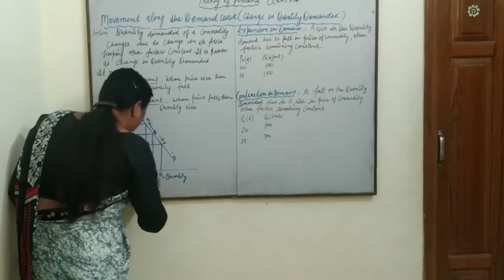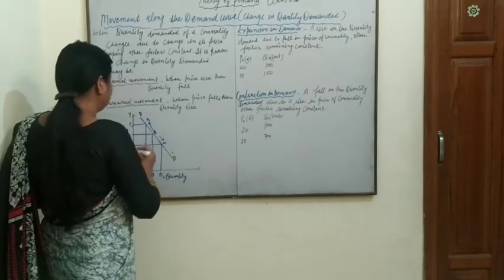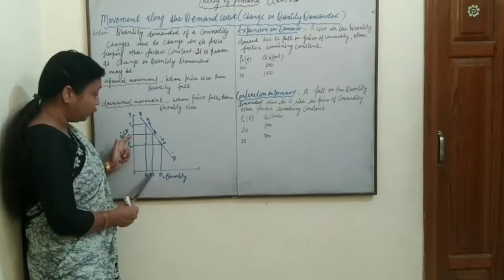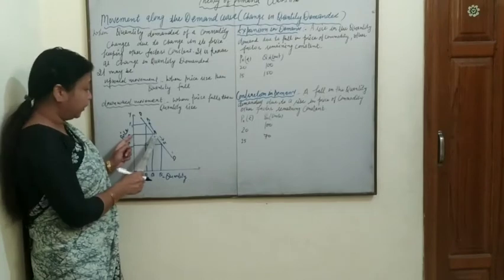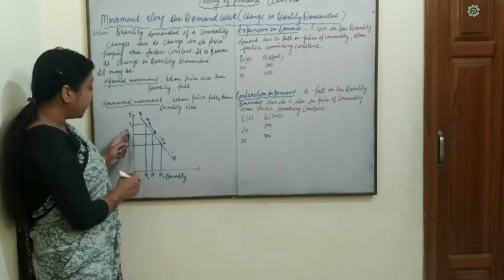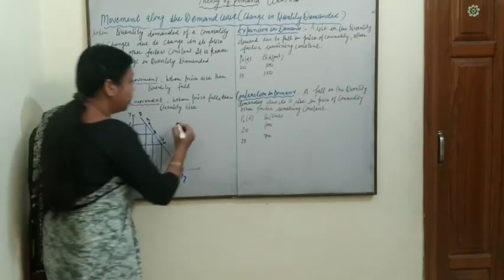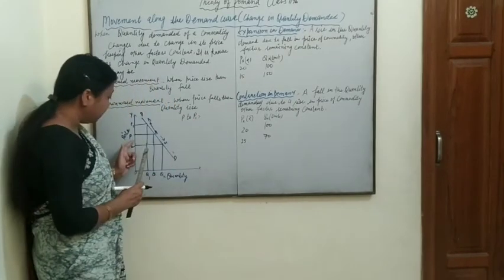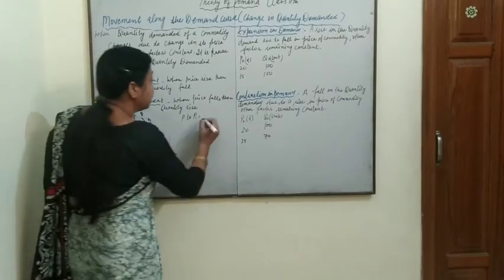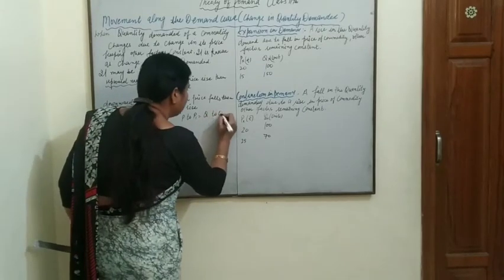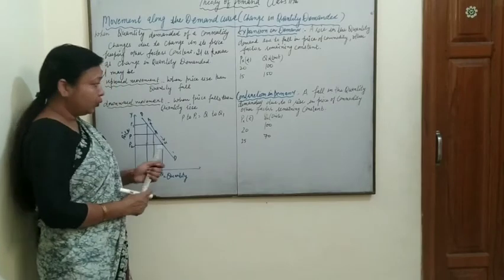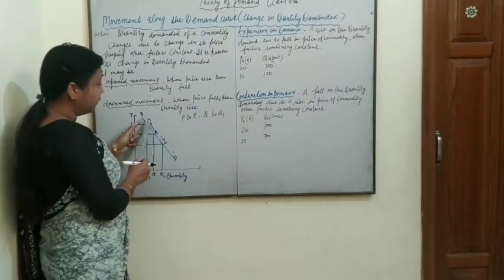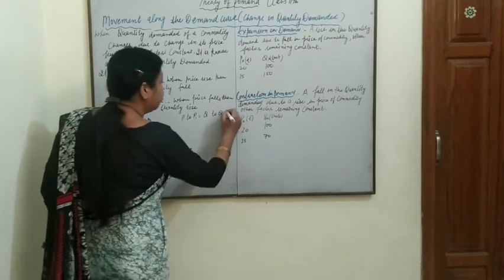In this diagram, on the OX axis we show quantity and on the OY axis we show price. The initial price is P, at which we demand Q units — this is our point A. If the price rises from P to P1, then quantity decreases from Q to Q1. This is the upward movement to point B.